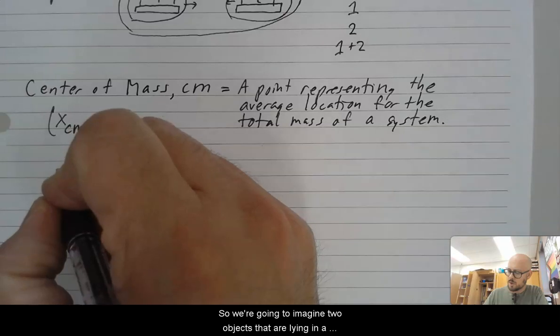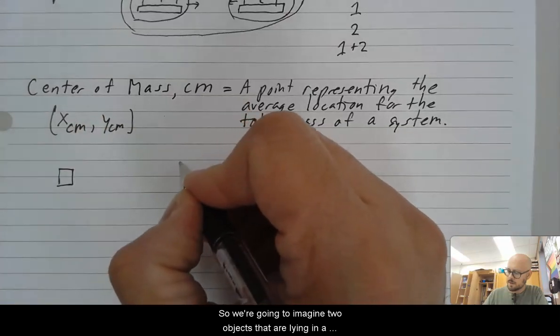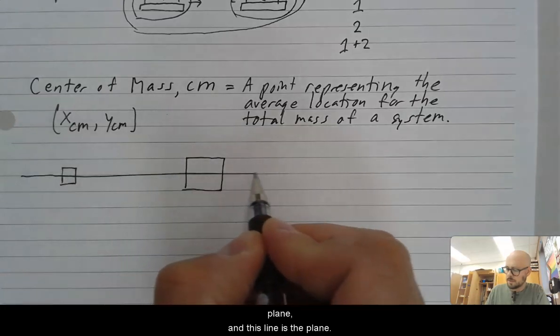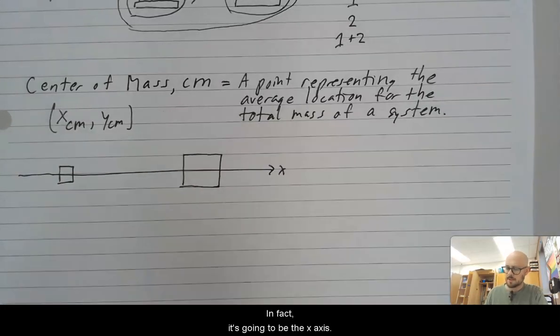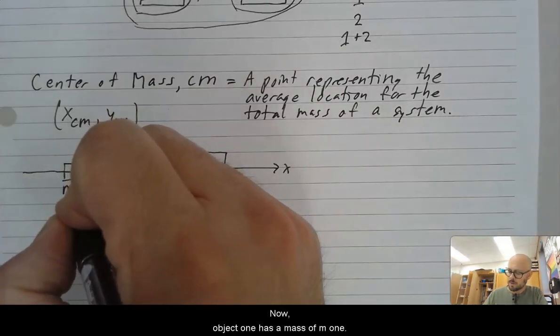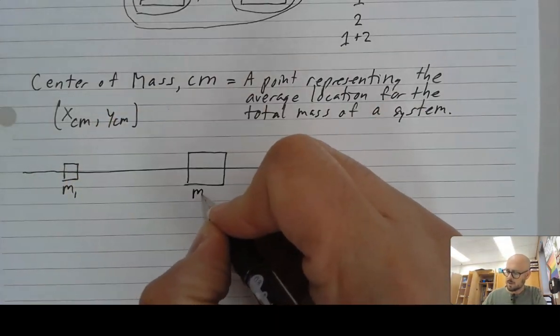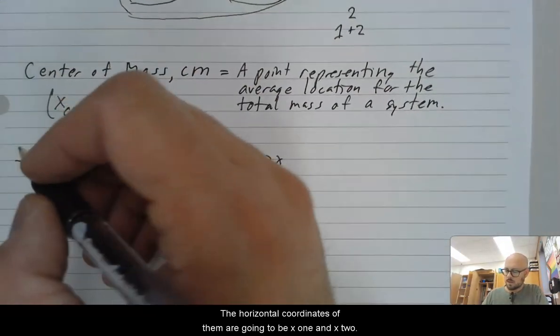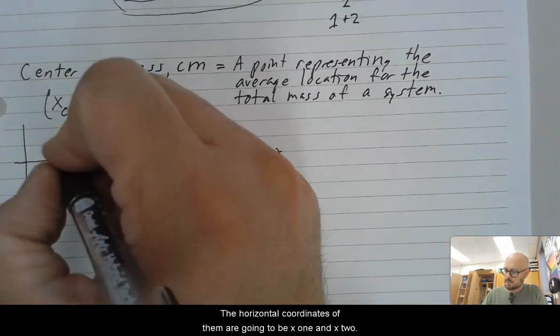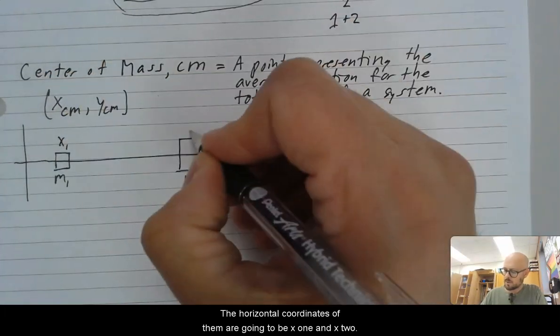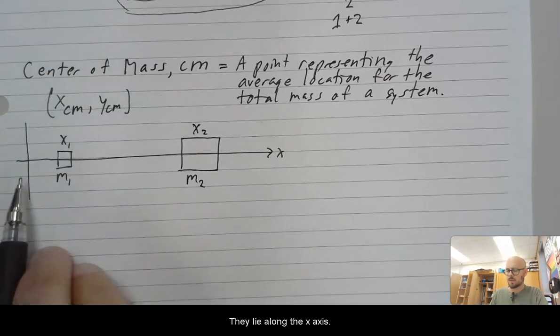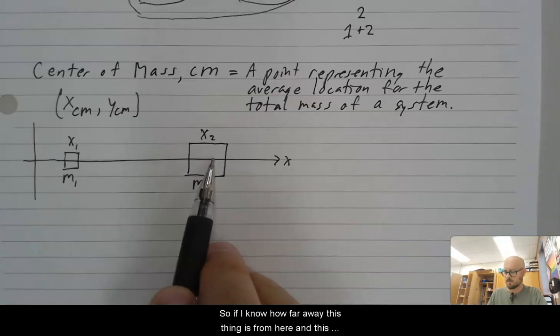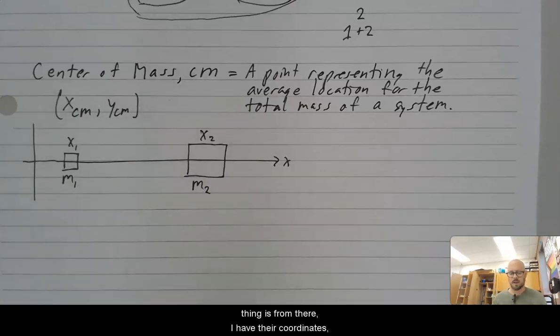So we're going to imagine two objects that are lying in a plane. And this line is the plane. In fact, it's going to be the x-axis. Now object one has a mass of m1. Object two has a mass of m2. The horizontal coordinates of them are going to be x1 and x2. They lie along the x-axis. So if I know how far away this thing is from here, and this thing is from there, I have their coordinates.